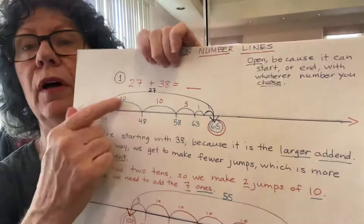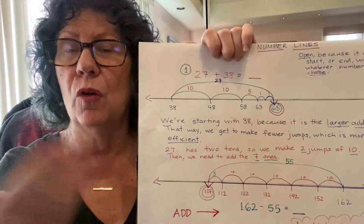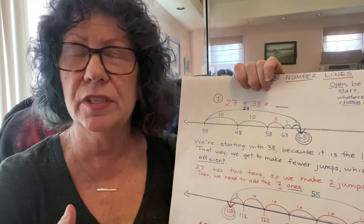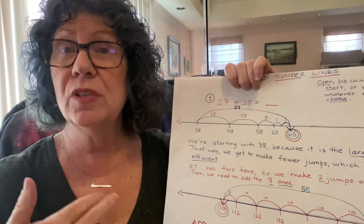So if we had the item 27 plus 38 and we drew a number line, we just draw a line as straight as we can. Sometimes the students are given a paper that already has a line on it. They don't have to be perfect or beautiful. But one of the reasons that we talk about what's called friendly numbers—friendly numbers are numbers that are easy to add and subtract with.